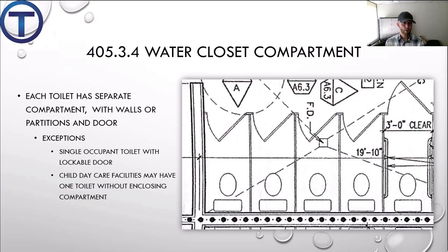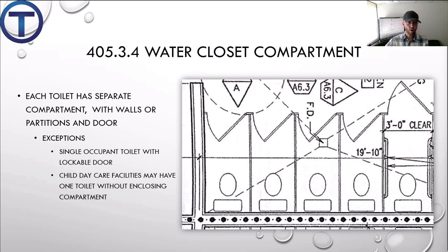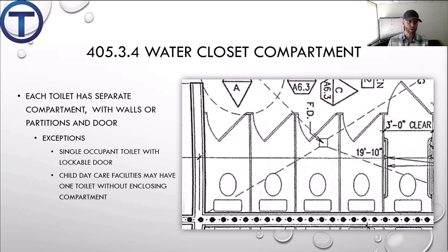405.3.4 water closet compartments requires that each toilet have a separate compartment, especially in a restroom with multiple toilets. Those toilets have to be separated by walls or partitions that have a door to ensure privacy. Exceptions: a single occupant toilet with a lockable door needs no partitions required. Daycare facilities may have one toilet that is not enclosed to help children who are potty training.